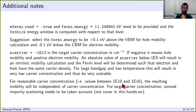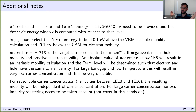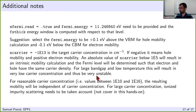A reasonable carrier concentration for a 3D bulk semiconductor is between 10^10 and 10^16 cm^-3. You can go higher without problems in principle, but if you request something like 10^25 the code may fail to find the Fermi level because it assumes it stays within the band gap. If you need the Fermi level inside the conduction or valence band, that is a different type of calculation requiring additional screening — we will not cover that here.